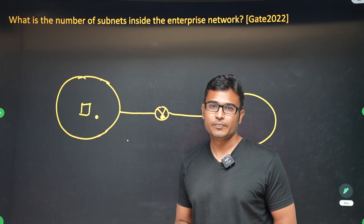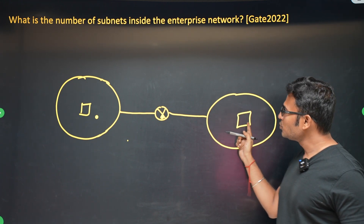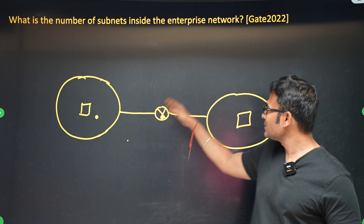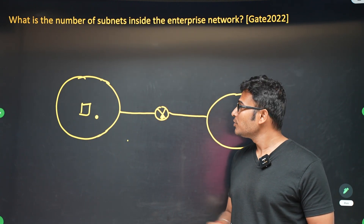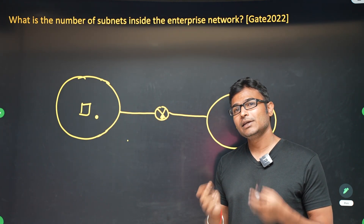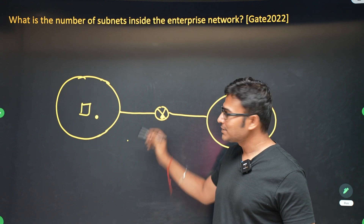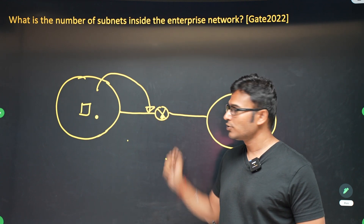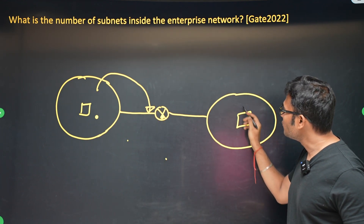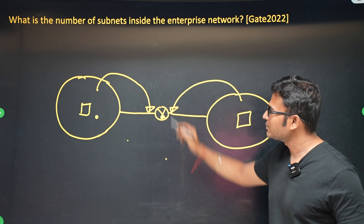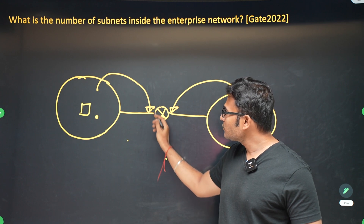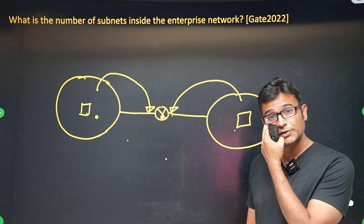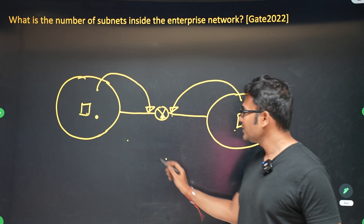Similarly, if a host on the other side wants to communicate with the router, the router must also be present in that network. So how do you place a router in two different networks? Practically, we assign one IP address from the first network to one interface, and one IP address from the second network to the other interface. This interface will be in the first network and that interface will be in the second network.